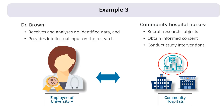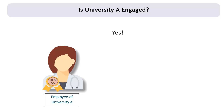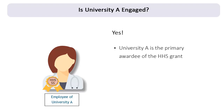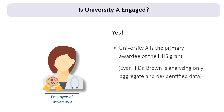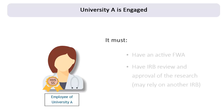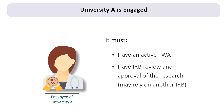Hospital CH, one of the participating hospitals, does not have an FWA filed with OHRP. Is University A engaged? Yes. University A is the primary awardee of the HHS grant to conduct non-exempt human subjects research with Dr. Brown as the lead investigator. Because it is the primary awardee, University A is engaged even if Dr. Brown is analyzing only aggregate and de-identified data. University A must have an active FWA and an IRB must review and approve the multi-institutional research project on its behalf in order to receive the grant award. However, University A may rely entirely or in part on the review of another institution's IRB or a central IRB so as not to duplicate effort.